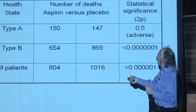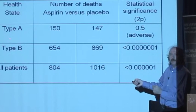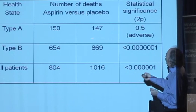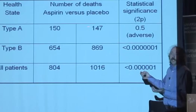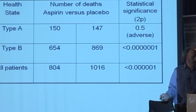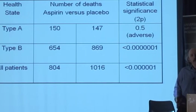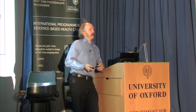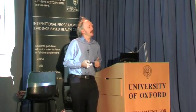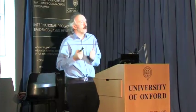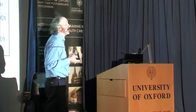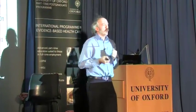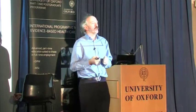But they also saw that once split into type A and type B people, the type A people showed an adverse effect — if anything — at 150 versus 147, though there's no statistical power there. But maybe type A people shouldn't get aspirin. Would you want to know, in the very unfortunate circumstance of having a heart attack, whether you are a type A or type B person in order to decide whether or not you want aspirin?